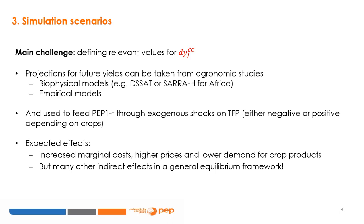Empirical models establish statistical links between agronomic and climate observations from the past to forecast future yields in new climatic conditions. Once future evolutions of yields are defined, we can feed the PEP1T model with these exogenous shocks on agricultural productivity, either negative or positive depending on crops. The expected effects will be numerous. For instance, on agricultural product markets, they will increase the marginal cost of crops, leading to price increases and lower demand. However, many other effects can be expected on other markets in the general equilibrium framework of PEP1T.